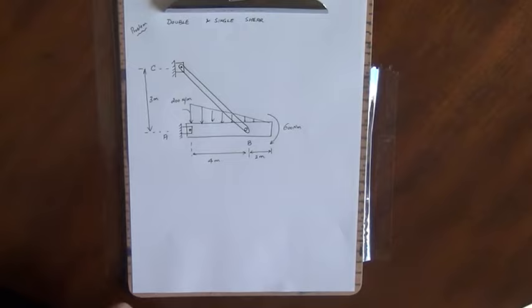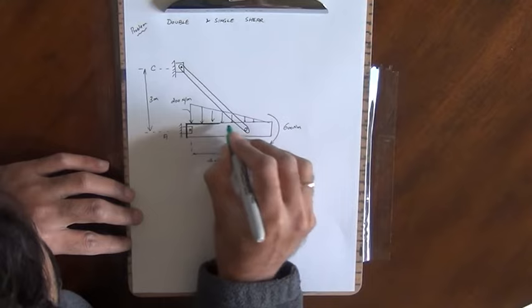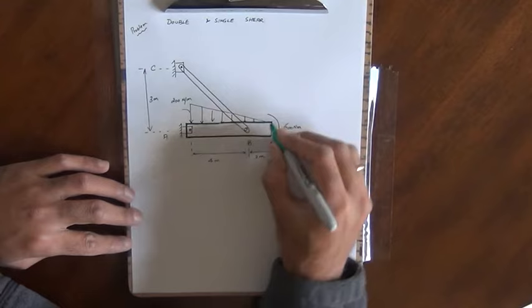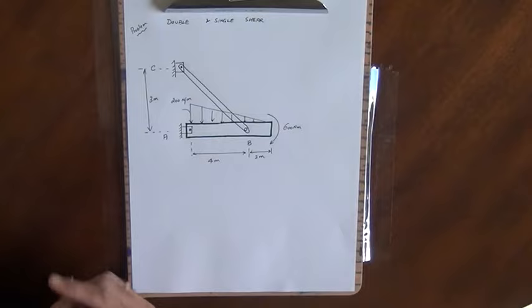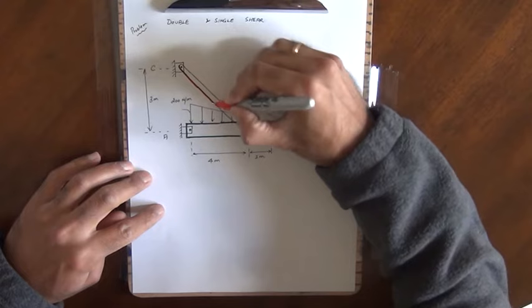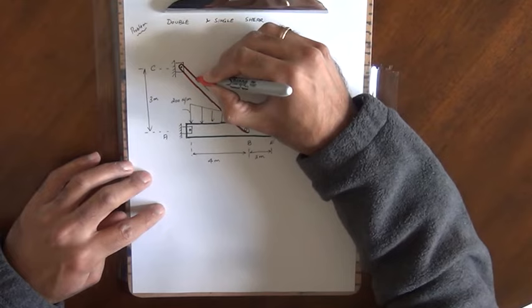I have bar BC and bar AB. Here is bar AB with a triangular load distribution on it, as you can see from the figure. Then I have bar BC. From the looks of it, BC is going to be a two-force member. It is supported by a pin at C, and then at point B the bars AB and BC are pinned together.